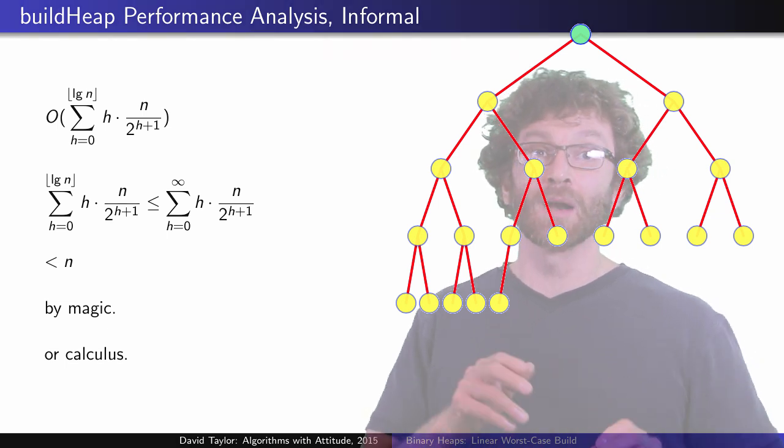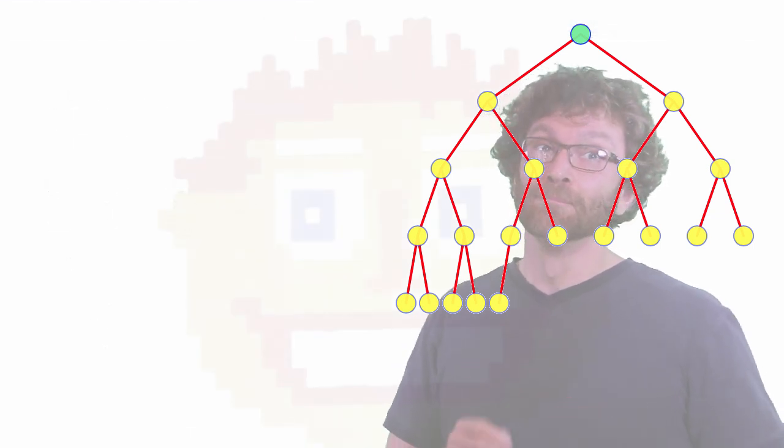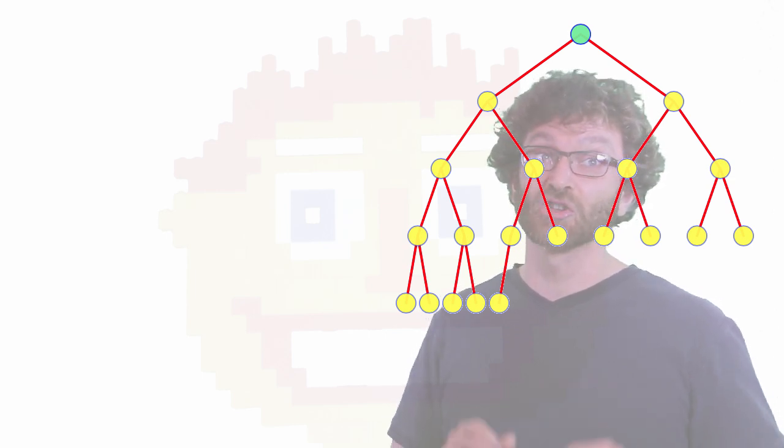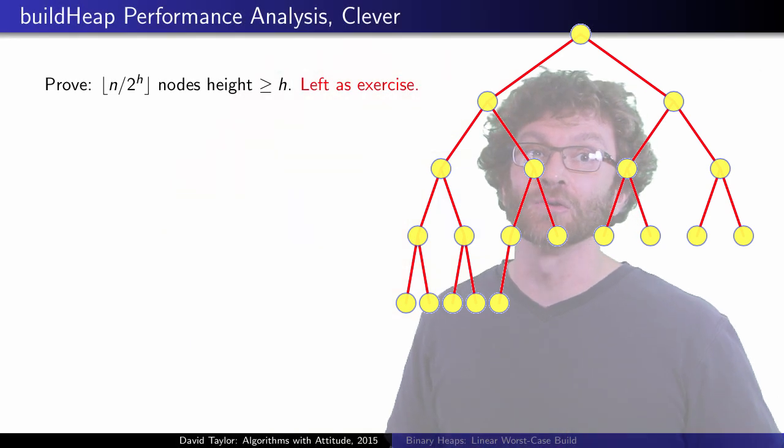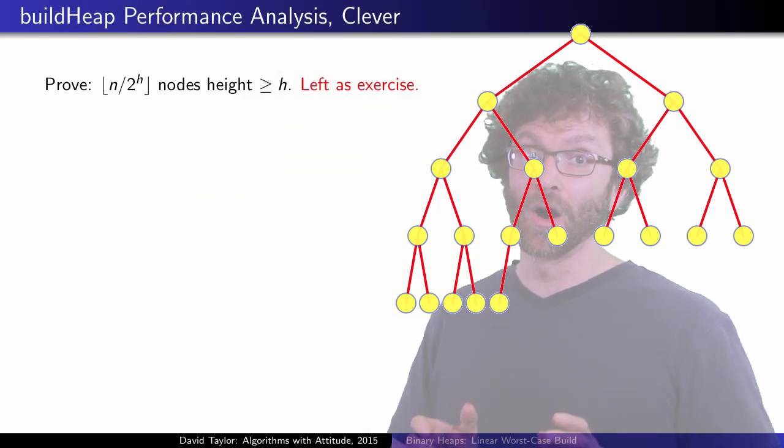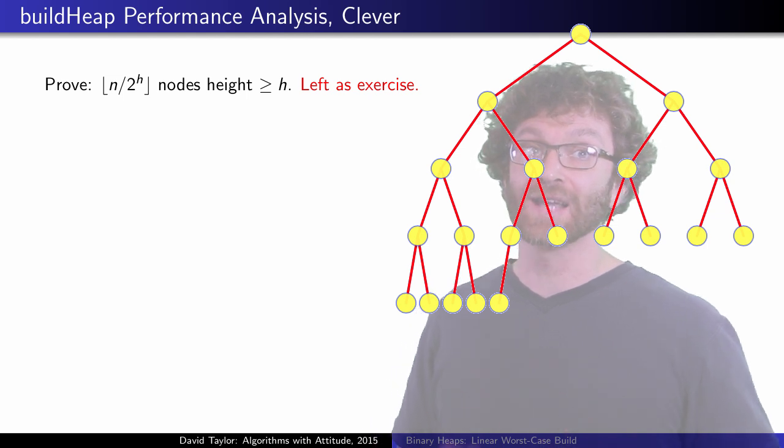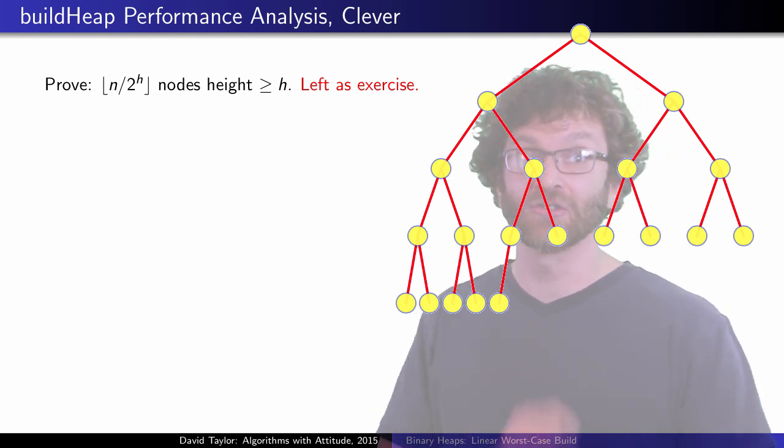Okay, well, if we want to make this more formal, but also simplify the math, we should first prove something about the structure of the heap. In a heap of n values, there are floor of n over 2 to the i nodes of height i or greater. I am actually going to leave that as an exercise for the viewer. It can be proved with induction.